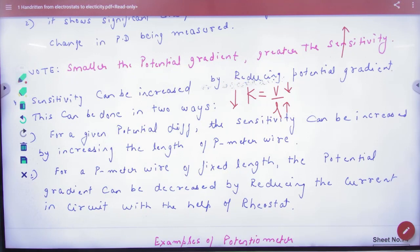So we can change the sensitivity in this way. Increasing the sensitivity is a good thing because a sensitive thing is a good thing. And what is the way to do it? Potential gradient will reduce. So the sensitivity will increase.